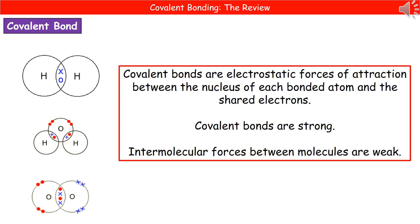When talking about a covalent bond, there are still electrostatic forces of attraction between the atoms — specifically between the nucleus of each bonded atom and the shared electrons. Covalent bonds are still strong bonds, but even though the bonds holding individual atoms together are strong, the forces that hold the molecules together — those intermolecular forces — are quite weak. This is why simple molecules like water and oxygen are easy to turn into gases; they only have weak intermolecular forces. The actual atoms don't come apart easily within the molecule because the covalent bonds are strong.